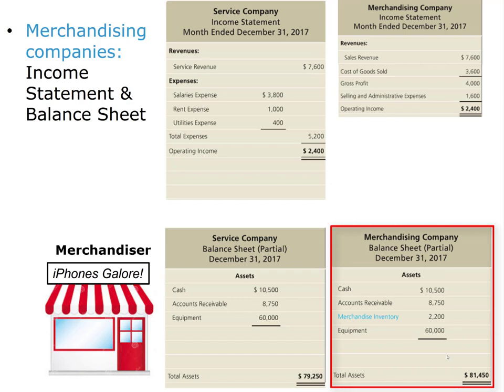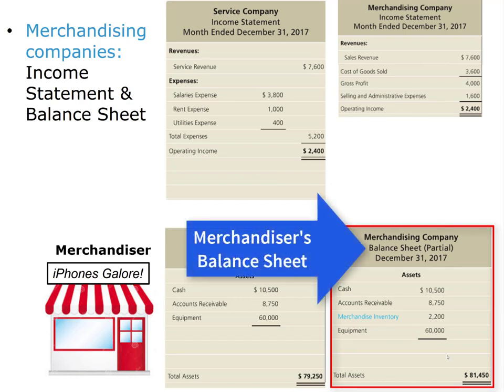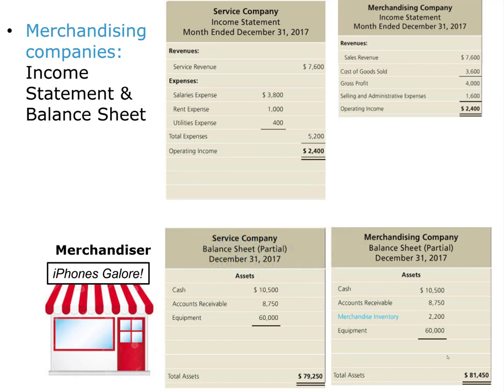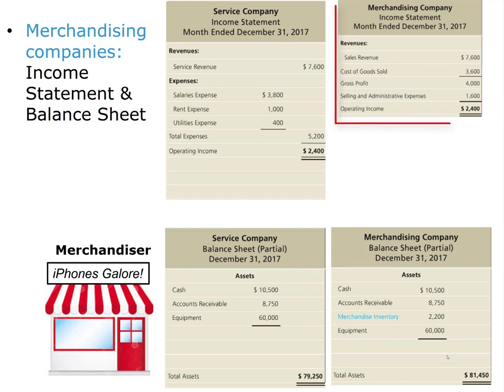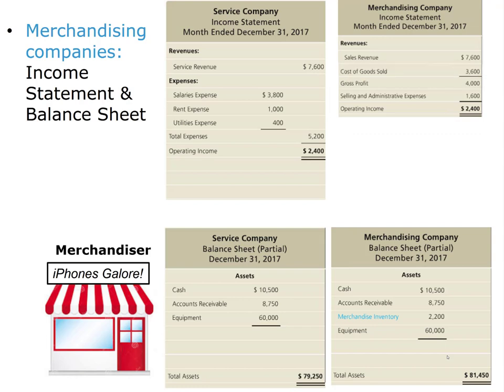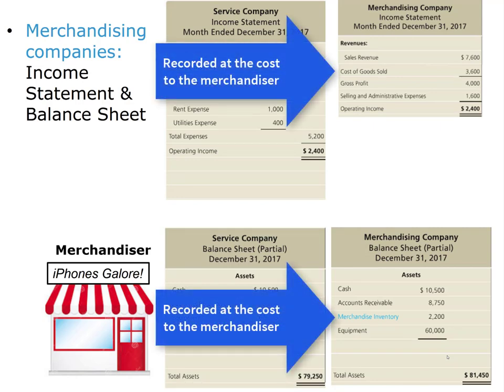Now let's look at the balance sheet at the bottom of the screen. We're only looking at the asset section to save space. Notice that there is an asset account called merchandise inventory. This represents the amount of merchandise on the company's shelves on December 31st — the date on the balance sheet. Merchandise inventory is the unsold merchandise, meaning they have some merchandise sitting on their shelves that has not yet been sold. To find how much merchandise the company sold, you'd look at the income statement — that's the cost of goods sold: $3,600. Remember, inventory and COGS are always listed at their cost to the merchandiser, not the sales price they think they may sell it for.